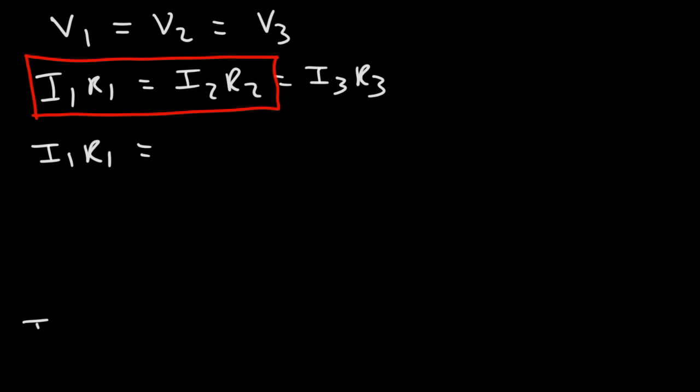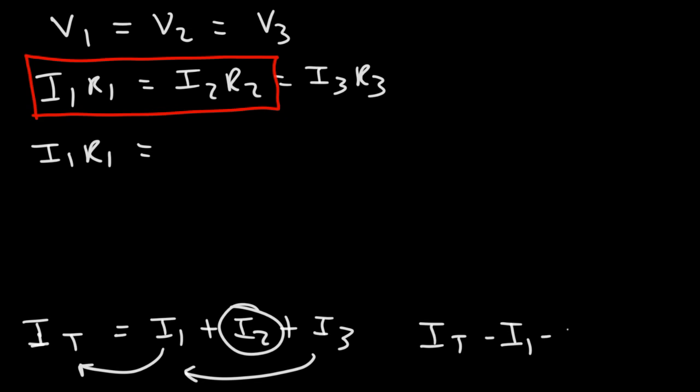Now, the total current in the circuit, which was the 13 amps, that's equal to the sum of the three currents flowing in the three resistors. So what I'm going to do is isolate I2 by moving I1 and I3 to the other side. So IT minus I1 minus I3, that's going to equal I2.